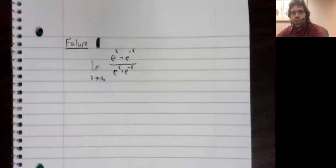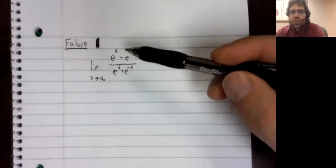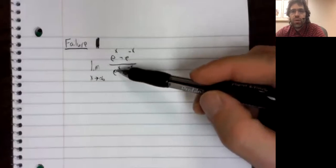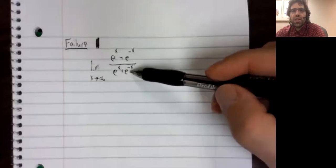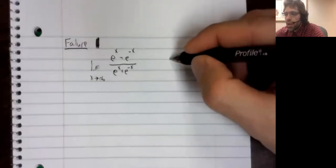Let's compute the limit as x goes to infinity of e to the x minus e to the negative x over e to the x plus e to the negative x. Quick reminder: